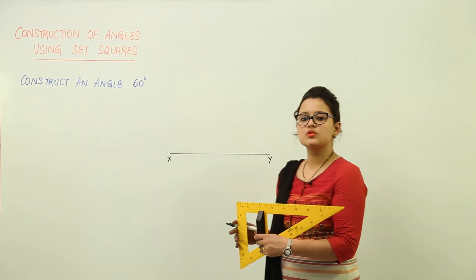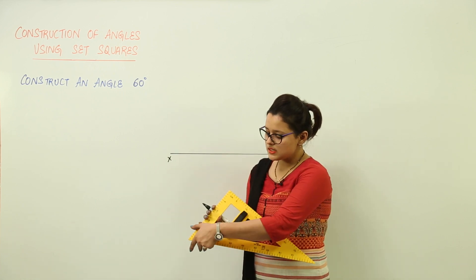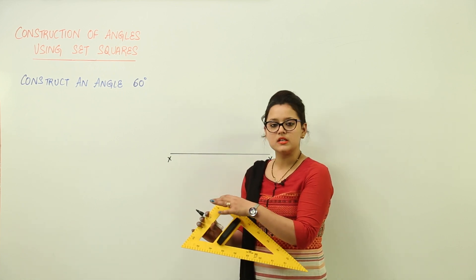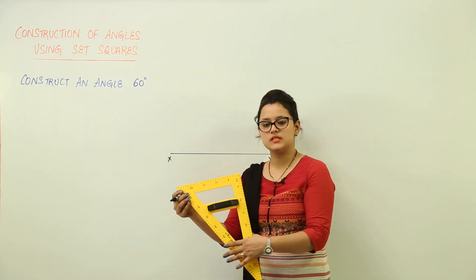So, we have to use the set square number 2 that has the angles 30 degrees, 60 degrees, and 90 degrees. Now, because we have 60 degrees on this vertex, this vertex is to be considered.